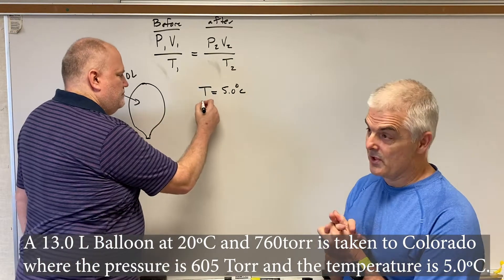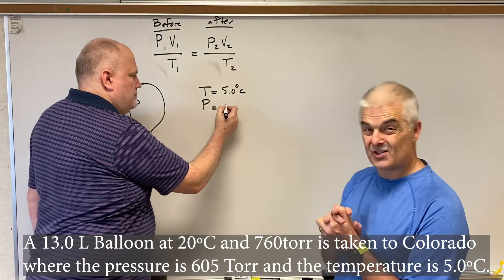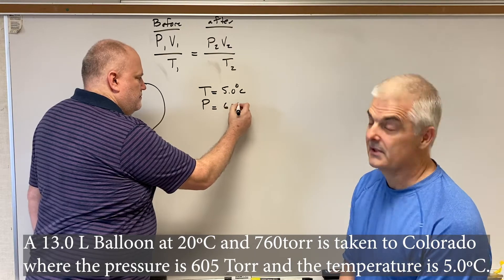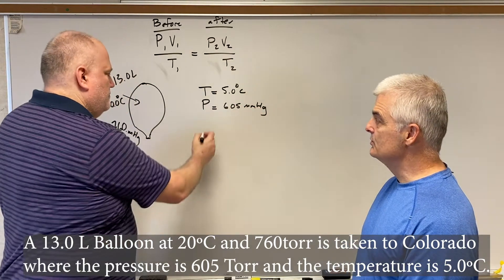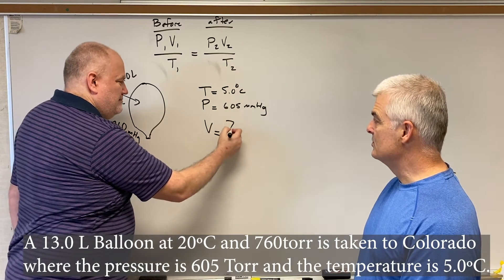But the pressure, big change in pressure, the pressure would be, let's say, 605 millimeters of mercury. So the question is, what happened to the balloon? What's the new volume of the balloon?